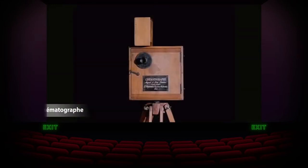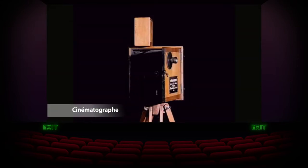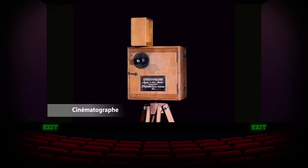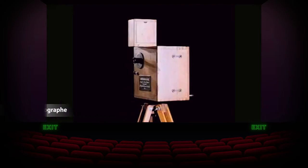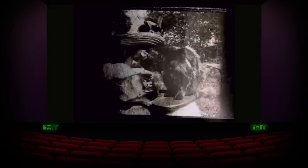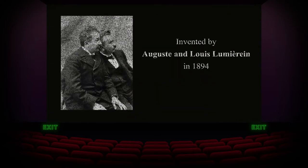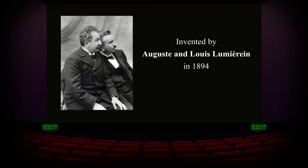The Cinematograph was a projector, printer and a camera in one machine that allowed moving pictures to be shown successfully on a screen. It was invented by history's earliest filmmakers Auguste and Louis Lumière in 1894.